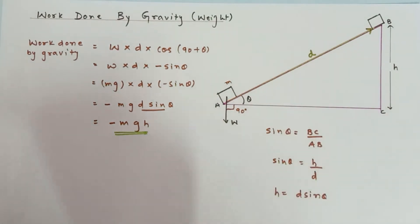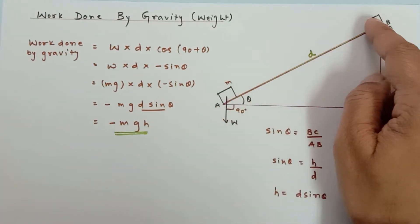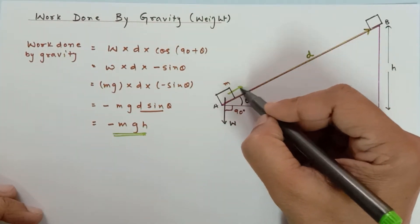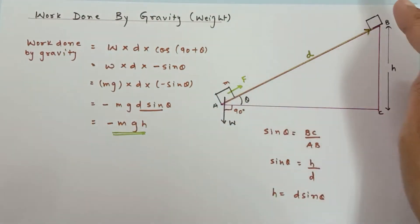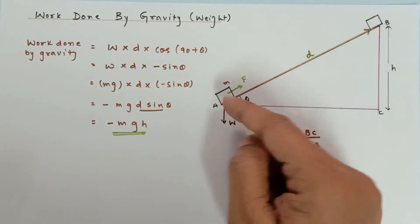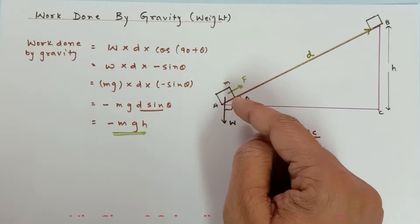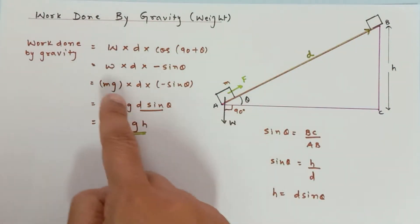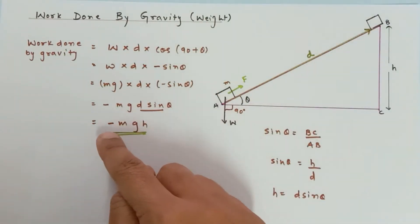Don't get confused — the block moves from A to B due to our applied force, so we are applying force in that direction. But the question asks us to find the work done by gravity. In the work done formula, the force should be weight, because they are asking about work done by gravity. You can see that when the block moves up the incline, the work done by gravity is negative.